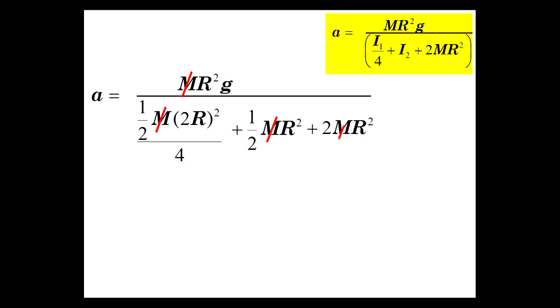Oh. The beautiful cancellation sequence. I just love it when that happens. And all that's left is G over 1 half plus 1 half plus 2, which is G over 3.